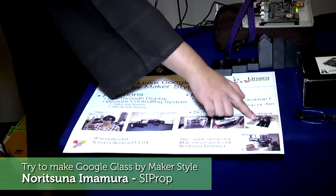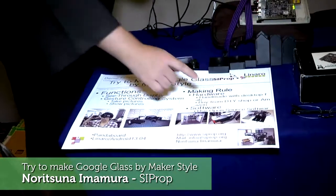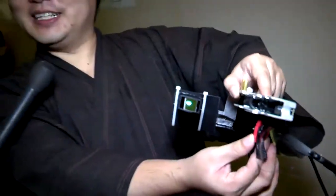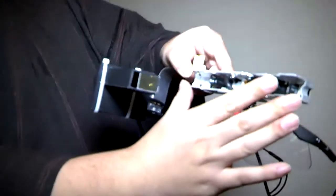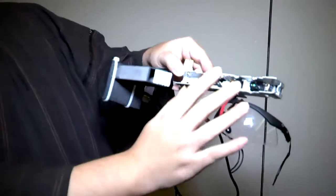This is a milling machine, this is a jigsaw. This is the handmade Google Glass. This is a see-through display. This is a distance camera like a Kinect device.